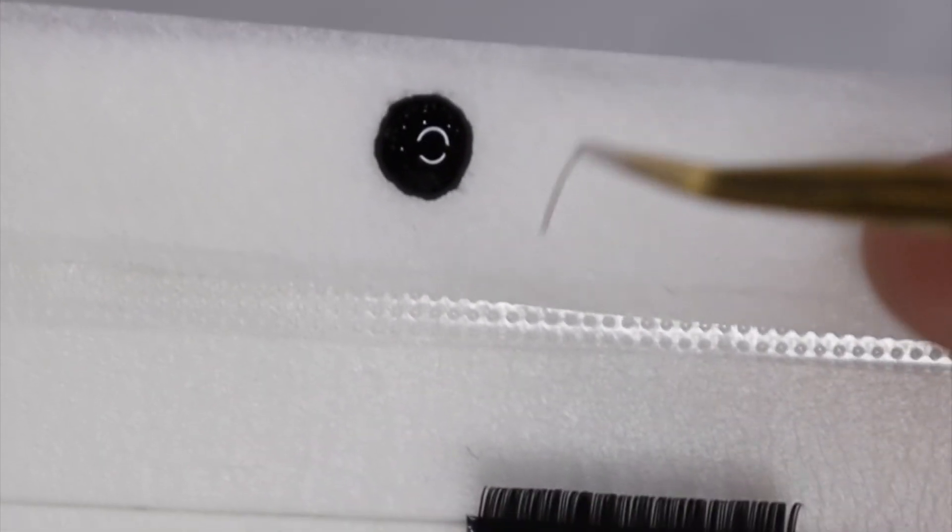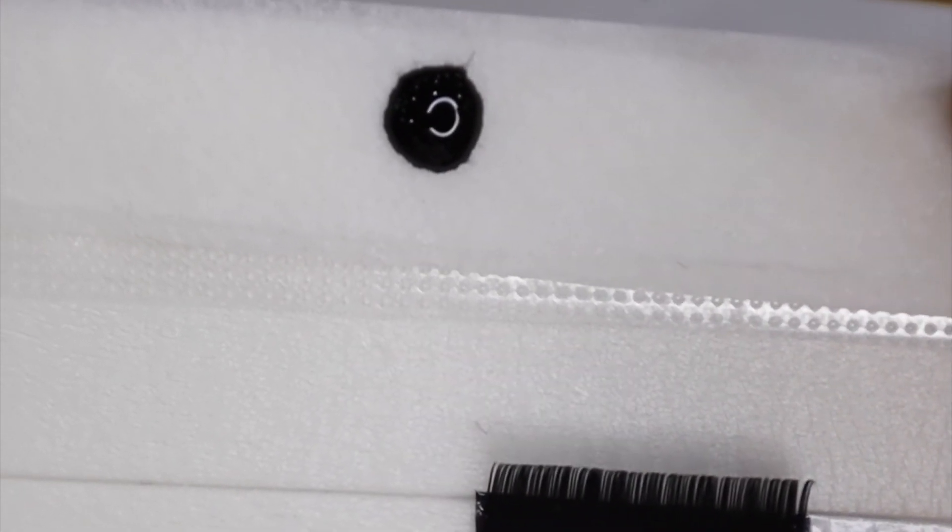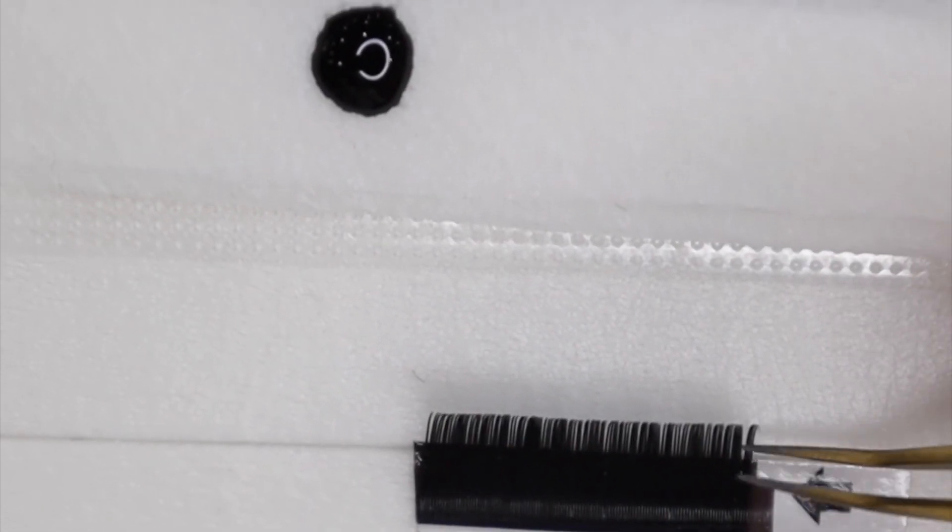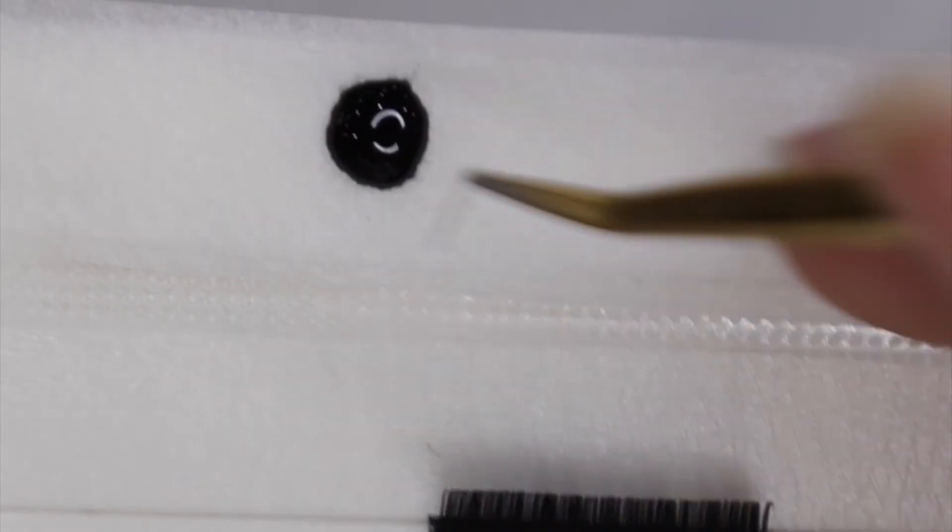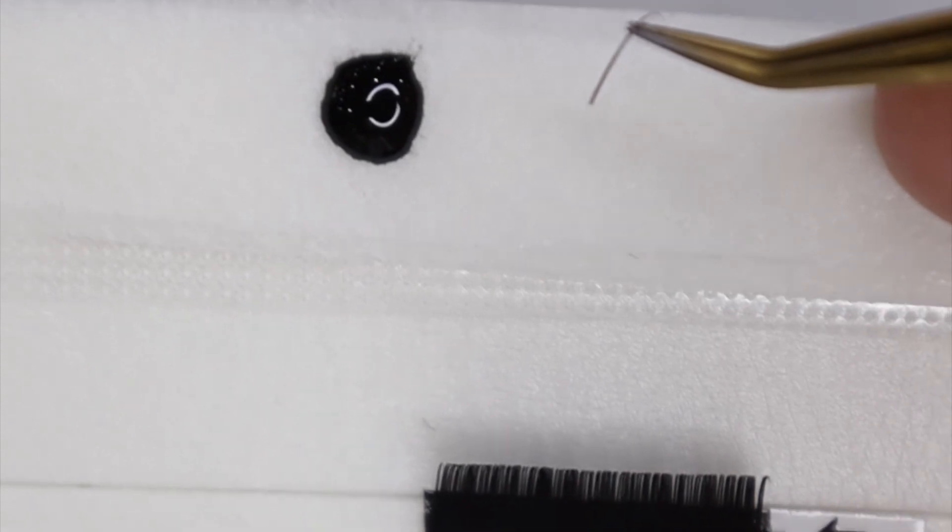You're going to pick up the lash, dip two to three millimeters inside the glue. Very controlled, using your ring finger or your pinky. Again, in and out like so.